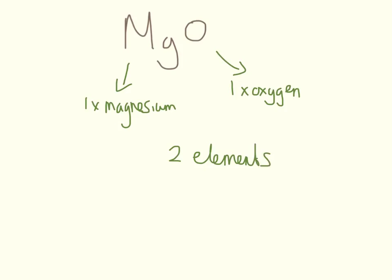This is magnesium oxide, MgO. It has one magnesium and one oxygen. So it has two different elements and two atoms in there.